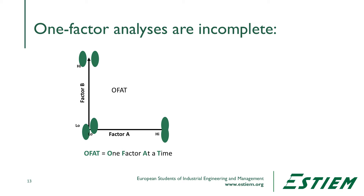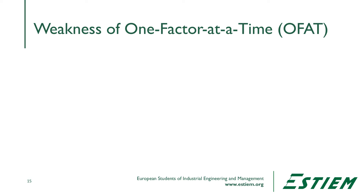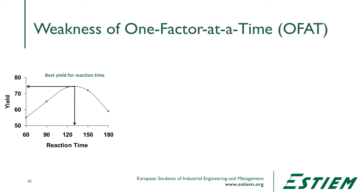First, I want to dispel a myth. Many engineers have been taught to take all factors, hold all of them constant except one, change that one, and see the effect on the output. That's called OFAT — one factor analysis at a time. With two or three factors, we start seeing that there are many things we miss because we don't see all combinations. In this example with reaction time, we find the best yield at about 130 minutes and the best temperature at 230 degrees Fahrenheit at 78% yield.